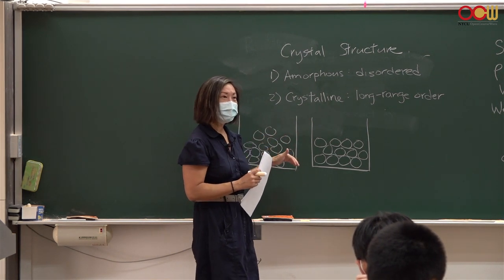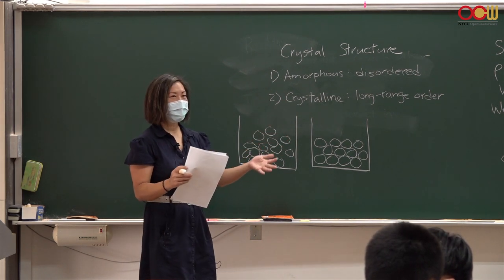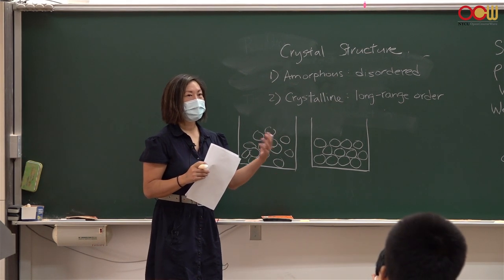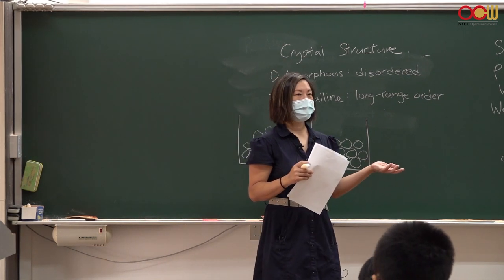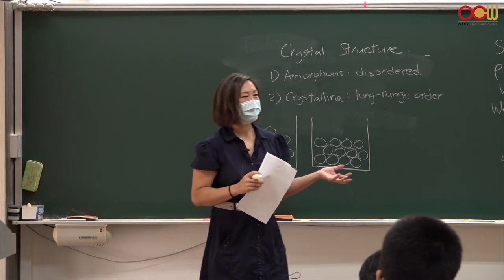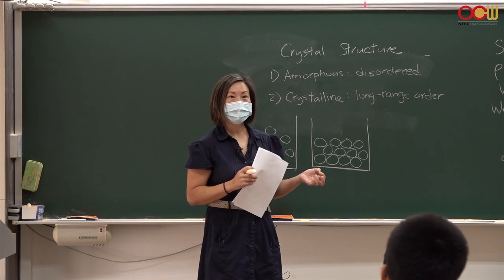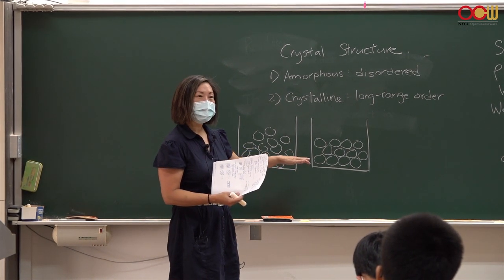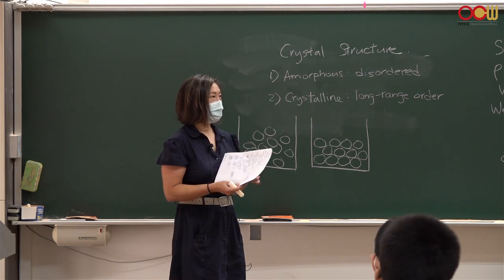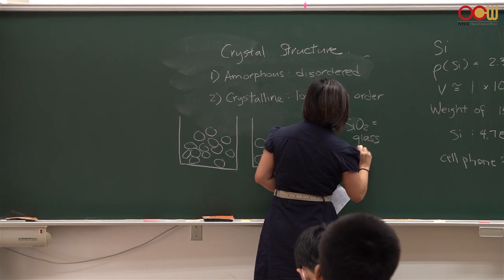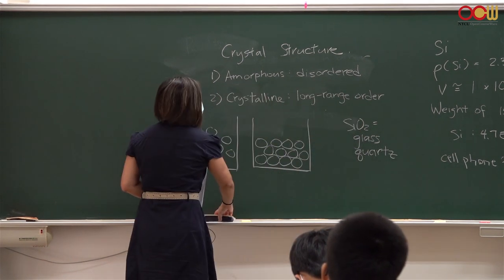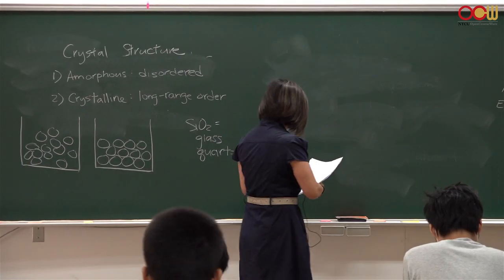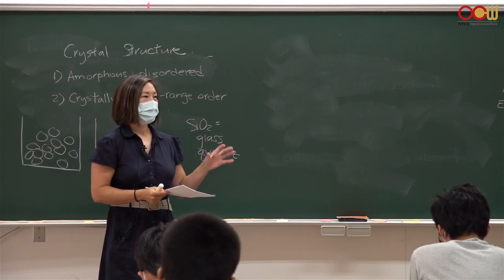For most materials, the crystalline form occupies the lowest energy state possible — that's why most materials are crystalline. We'll talk about how that arrangement causes carbon to be diamond versus graphite versus carbon nanotubes. Similarly, silica (SiO₂) can form amorphous glass or, in its crystalline form, quartz — and quartz and glass behave differently due to their crystal structure.